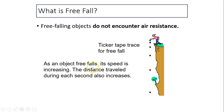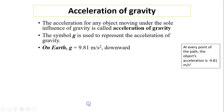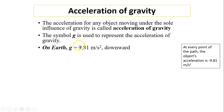As an object falls, its speed is increasing. The distance traveled during each second also increases. Acceleration for any object moving under the sole influence of gravity — that means only gravity, no air resistance — is called acceleration of gravity. We use the symbol little g to represent acceleration of gravity.